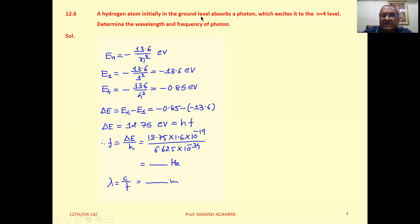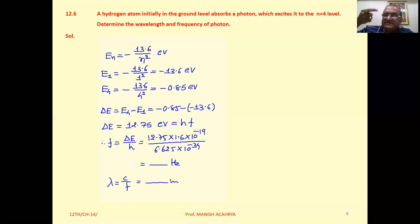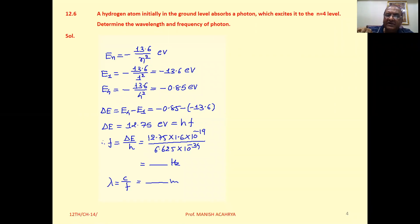Initially in the ground state, the atom absorbs a photon and excites to n equals four. From the excited state, it will jump to ground state again.